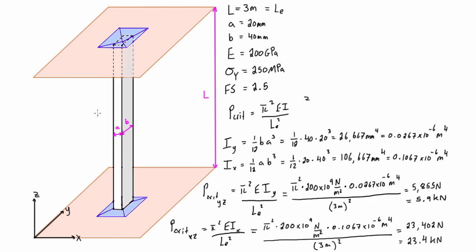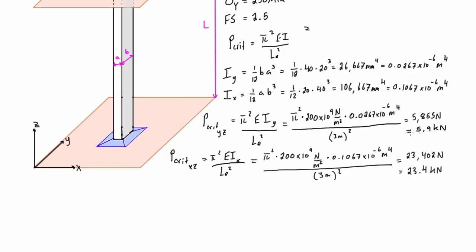Comparing the two critical loads: buckling in the YZ plane gives 5.9 kN, and buckling in the XZ plane gives 23.4 kN. Intuitively this makes sense — a smaller load is needed to buckle in the direction with less material around that axis. If we applied just 6 kilonewtons we'd cross the threshold, so 5.9 kN is our governing P_crit for the whole column.